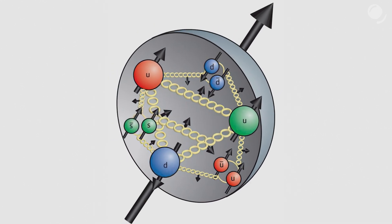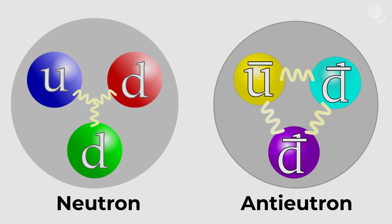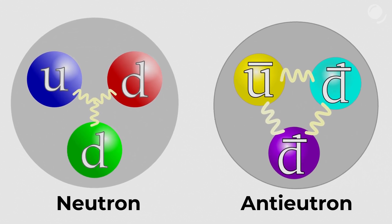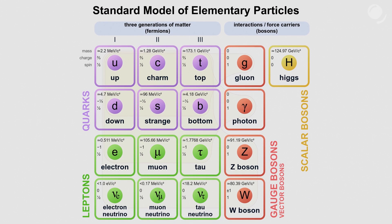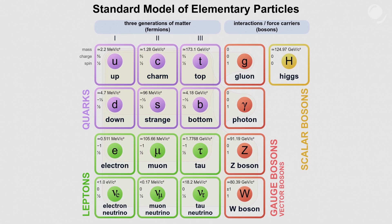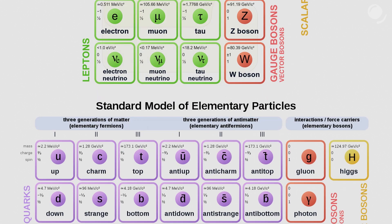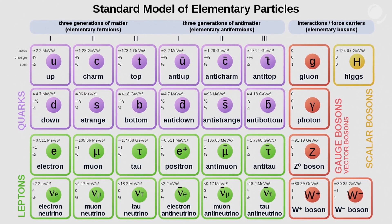Even though you can see illustrations of atoms where the nucleus is made of protons and neutrons surrounded by electrons or an electron cloud, we now know that protons and neutrons are made of quarks. A neutron is made of one up quark and two down quarks, whereas an antineutron is made of one up antiquark and two down antiquarks. You might have seen the table of the standard model of elementary particles — but we don't see antiparticles there.